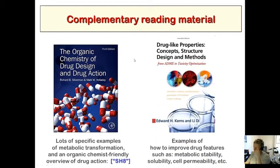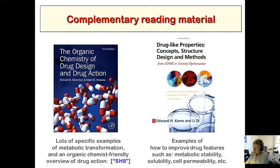Another book that is pretty good, especially if you eventually become a medicinal chemist, is 'Drug-like Properties: Concepts, Structure, Design, and Methods from ADME to Toxicity Optimization.' It talks about various classes of molecules and structural features that might cause problems like toxicity in a drug — metabolism, aqueous solubility, pharmacokinetics, cell permeability, CYP inhibition which are the metabolic enzymes, toxicity, and the concept of prodrugs. Prodrugs will be coming up in the next couple of weeks, along with toxicity.